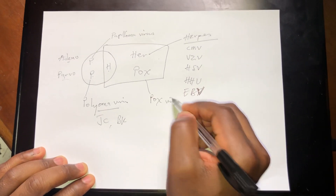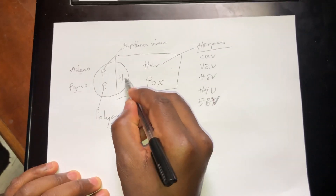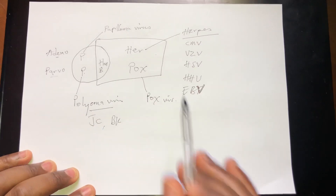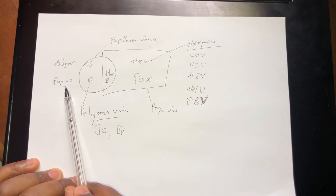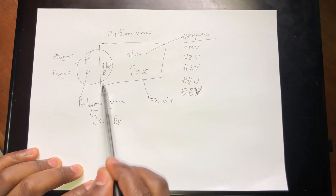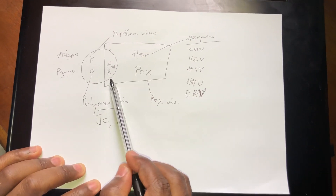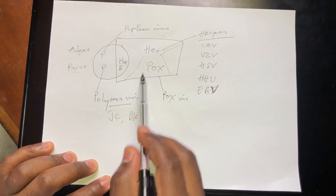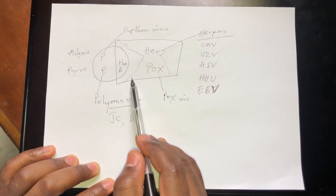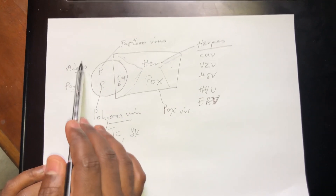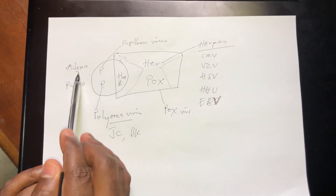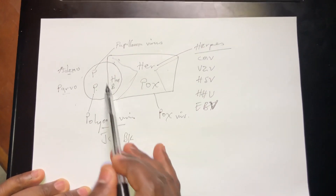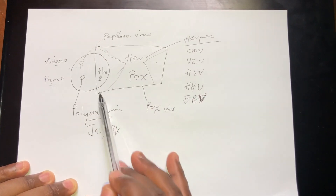Here we have the Pox virus, and here is the Hep B — the one that causes Hepatitis B. So these are all the DNA viruses you need to learn for USMLE step one. When you see a virus in this circle, it means it is circular. If you see it in the envelope, it means it is an enveloped virus. Anyone that falls in the envelope is an enveloped virus; this one is circular. When you see it outside the envelope, it means it is a naked virus. So Adenovirus, Parvovirus, Polyoma, and Papilloma are all naked.